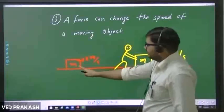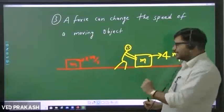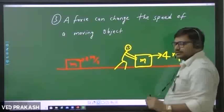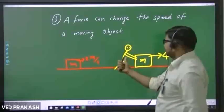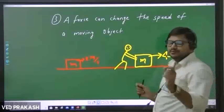Here, this mass M is moving with speed 2 meters per second, and a boy is applying force on it. Then after application of this force, its speed changes to 4 meters per second.